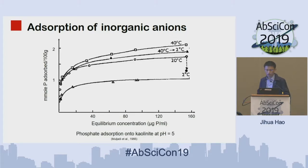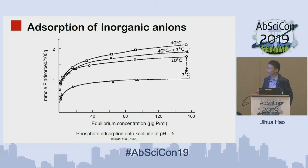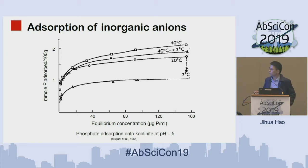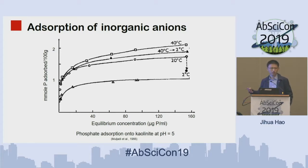Here is another example about the absorption of phosphate onto colonite. It's quite surprising that not so many people focus on this. I only found a very limited study on this topic. But apparently, from 2°C to 40°C, increasing temperature greatly elevates the absorption of phosphate, which has very important implications for the availability of phosphate on the early Earth ocean or on other exoplanets.